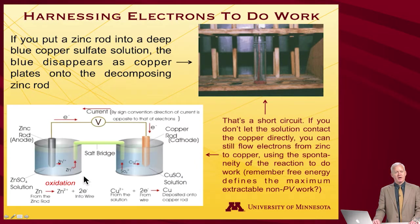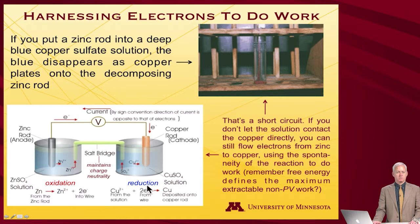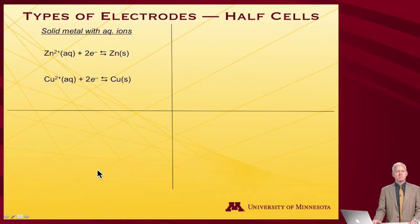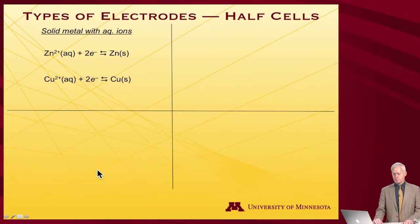To summarize: on the left-hand side we have oxidation occurring at the anode, and on the right-hand side we have reduction occurring at the cathode. The salt bridge maintains charge neutrality. Let's now look at a few different kinds of electrodes and in particular kinds of half cells.